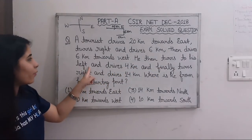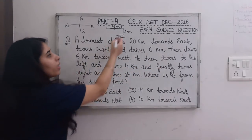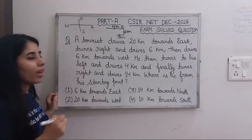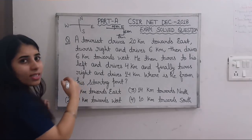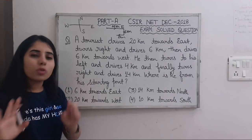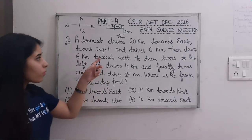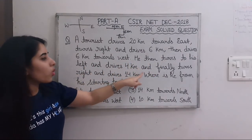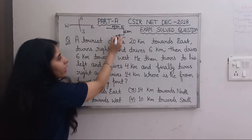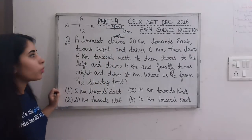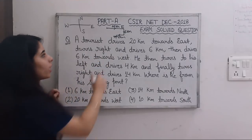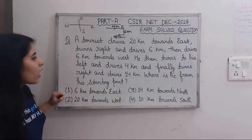He then turns to his left and drives 4 km. Consider yourself moving westward — your left-hand side from that direction is north. So we move 4 km in the north direction. The left direction will be north in this case, and we move 4 km that way.